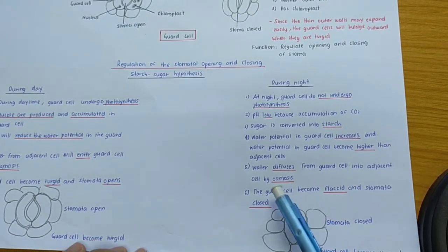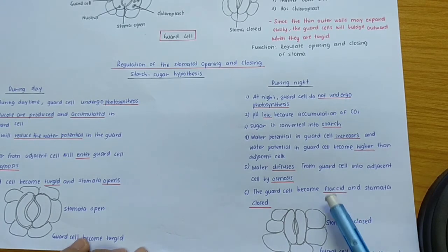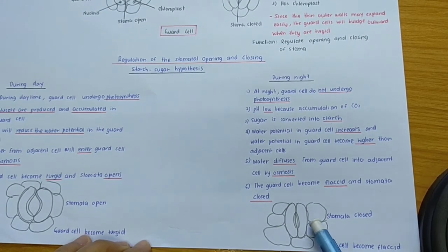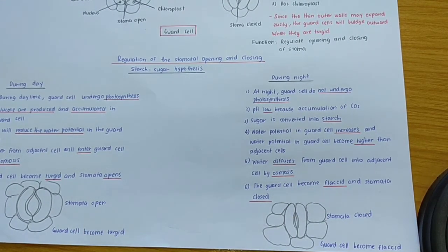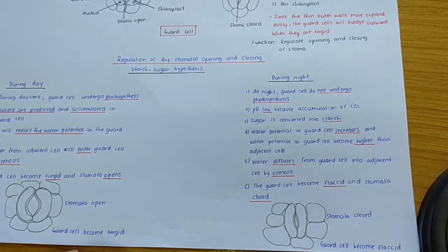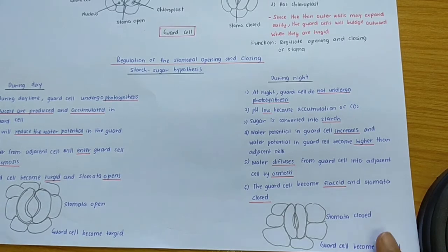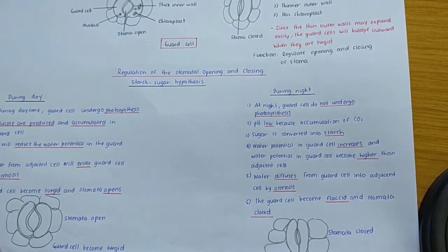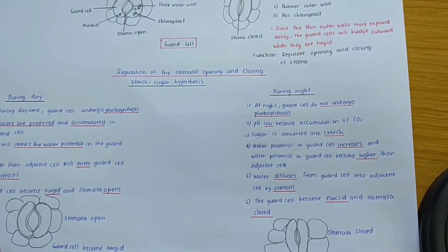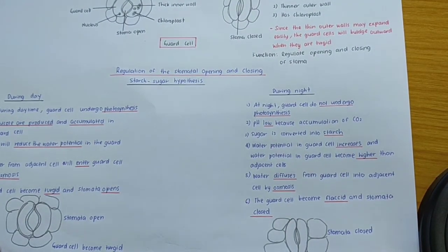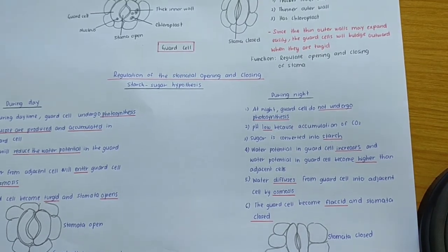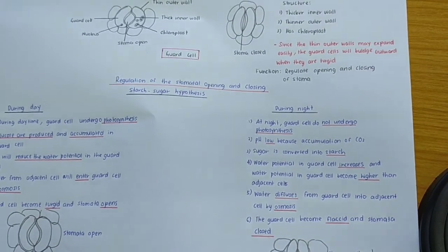Since water diffuses out from the guard cell, the guard cell becomes flaccid and the stomata will close. As a conclusion, the stomata closes because the guard cell becomes flaccid. This is what happens to the stomata based on the starch-sugar hypothesis.